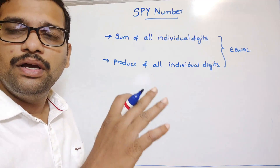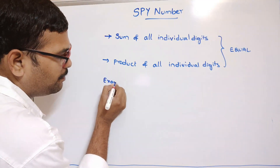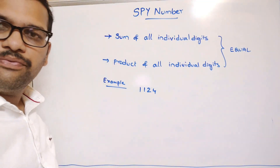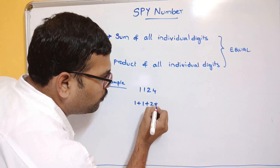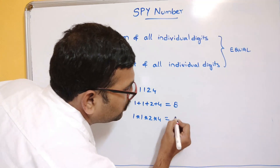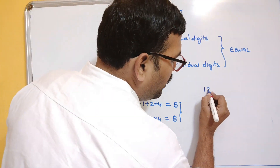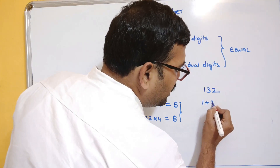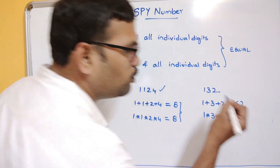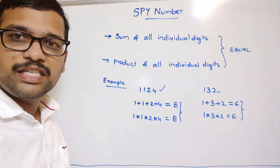We need to find the individual digits, then find the sum of all individual digits as well as the product of all individual digits. For example, consider 1124: sum is 1+1+2+4 = 8, and product is 1×1×2×4 = 8 — both equal, so it is a spy number. Another example: 132 — sum is 6, product is 6, so 132 is also a spy number.